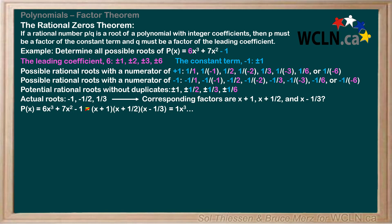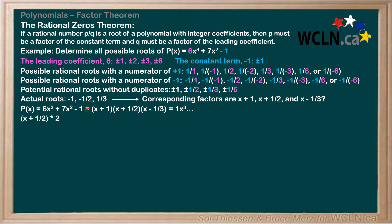It turns out that we were on the right track with x plus 1 half and x minus 1 third — we just needed to multiply them through by the denominators of their fractional terms. That means we multiply x plus 1 half by 2, which gives us 2x plus 1. Notice that 2x plus 1 is also set to 0 when x is negative 1 half, so the root at x equals negative 1 half is preserved. Then we multiply x minus 1 third by 3, which gives us 3x minus 1. Again, 3x minus 1 is set to 0 when x equals 1 third, so that root is preserved as well.